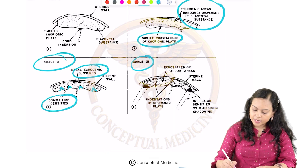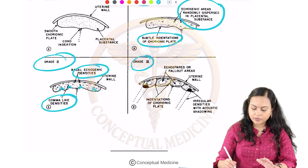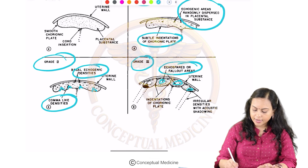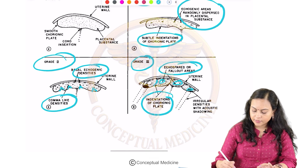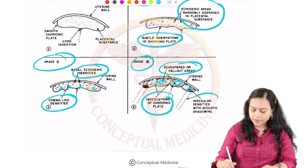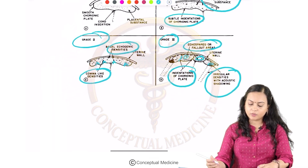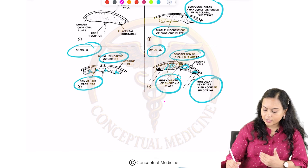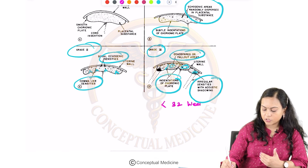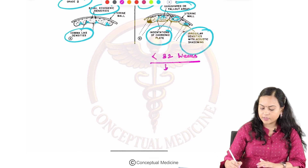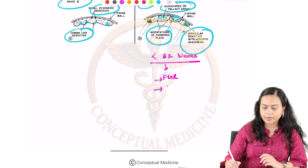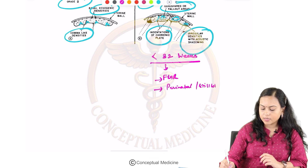In stage 3, there are fallout areas present, indentations of the chorionic plate get even deeper, and irregular densities with acoustic shadowing are present. If stage 3 is seen before 32 weeks of gestation, it can result in adverse perinatal outcome, including FGR, perinatal death, or stillbirth.